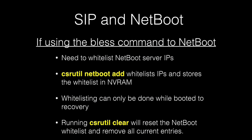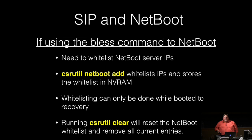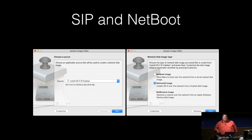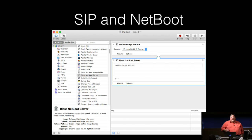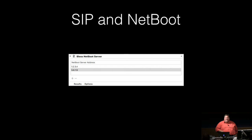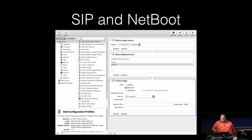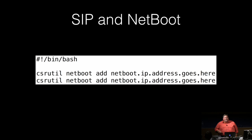If you're using BLESS, you will need to use csrutil while booting into recovery to whitelist the IPs of your NetBoot servers. Apple has also provided a way to set the whitelist when using System Image Utility to build a Net Install or Net Restore set. This option is an Automator action called Bless NetBoot Server, available when you click the Customize button in System Image Utility. You enter the relevant IPs into the Bless NetBoot Server entry blanks, and once the boot set is built, your NetBoot server IPs will be automatically added to the SIP whitelist on machines set up by that Net Install or Net Restore set. You could replicate this using a script, but the crucial detail is that you need to run the script while booted into the recovery environment.